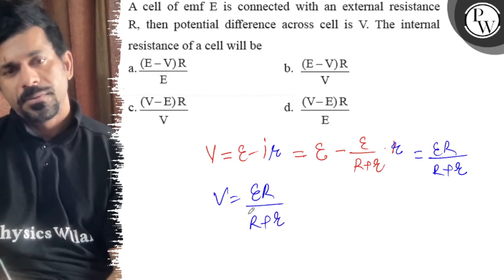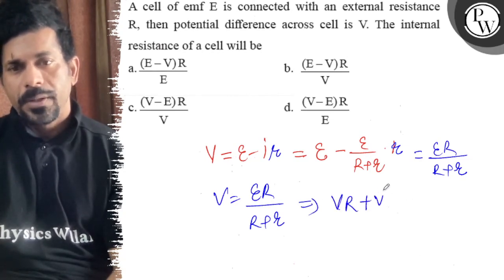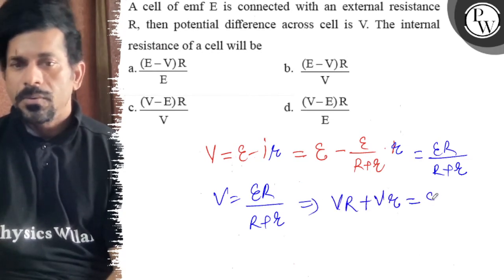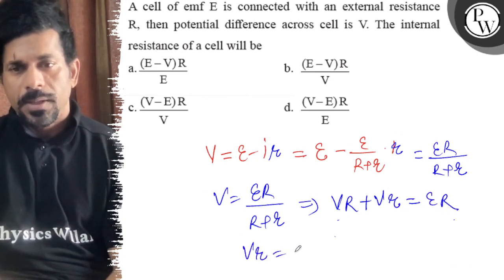Now do the work, take this to the other side, so E will become V capital R plus V into small r is equal to E into capital R. Take this to the other side, so V into small r is equal to E minus V capital R.